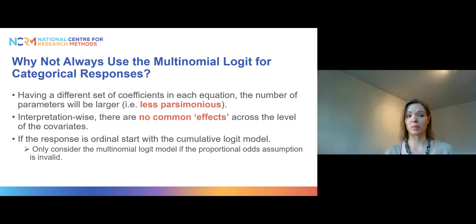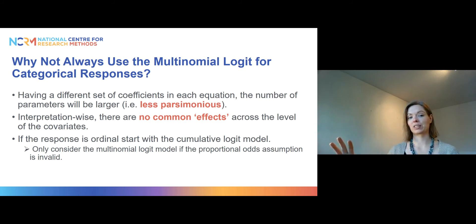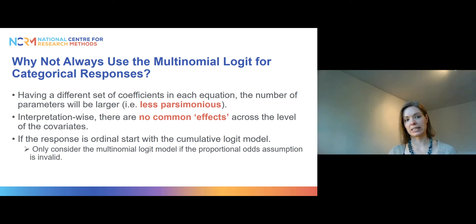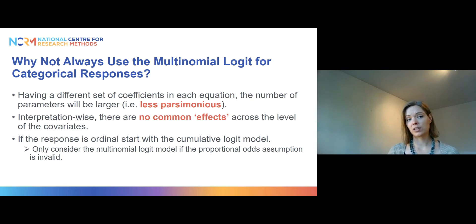Another advantage of the ordinal model compared to a multinomial one is that you have common effects that you can interpret across the different levels of covariates. Because you only have one set of estimates, it applies to all the different categories of the outcome, whereas with a multinomial model you have to compare every pairwise equation separately. My recommendation would be that if you have an outcome variable with more than two ordered categories, you start with an ordinal model and see if the assumption of proportional odds holds. You should only consider a multinomial model if the proportional odds assumption is invalid.